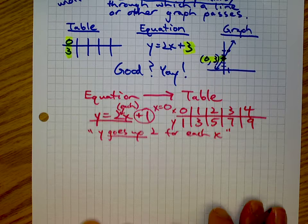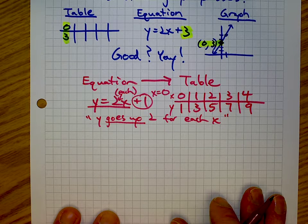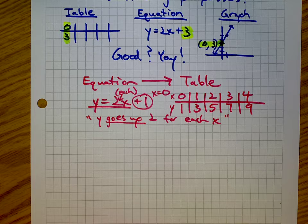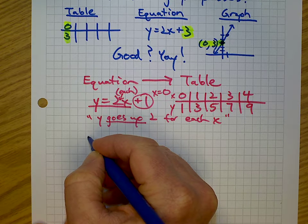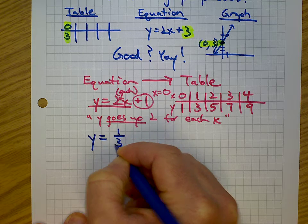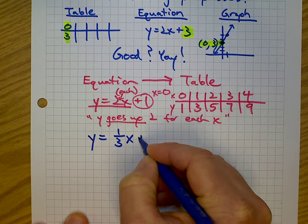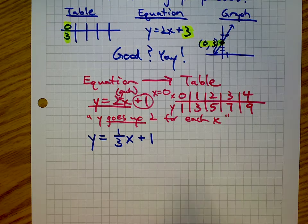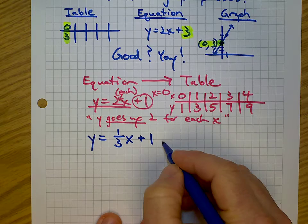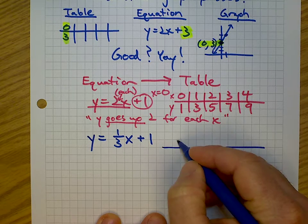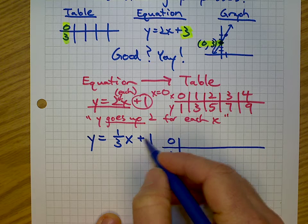Now, when we get a fraction, things change a little bit. Let's look at the equation y equals one-third x plus one. I used plus one so we don't have to argue about where the y-intercept is — we know it's there. Remember, x is always on top in the x-y table.